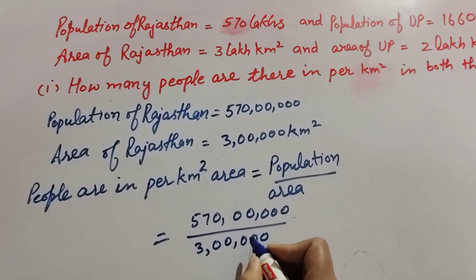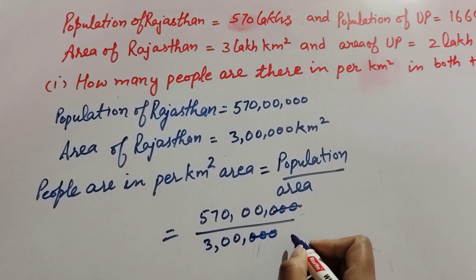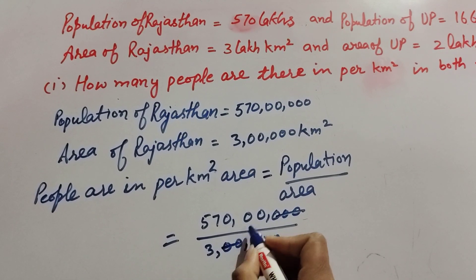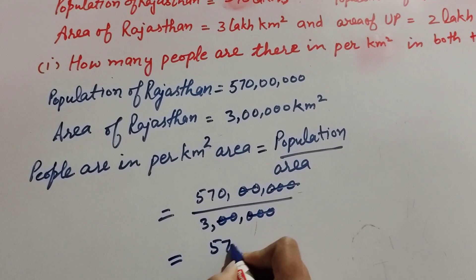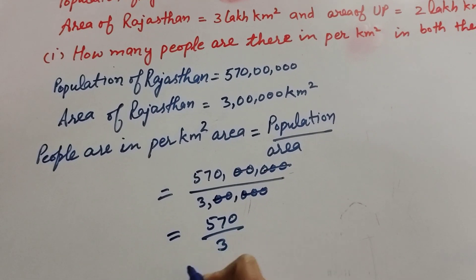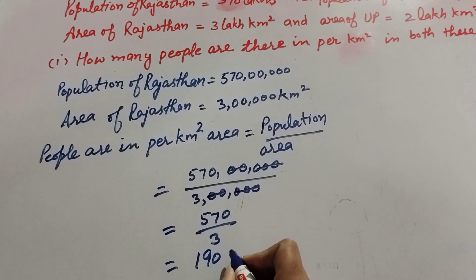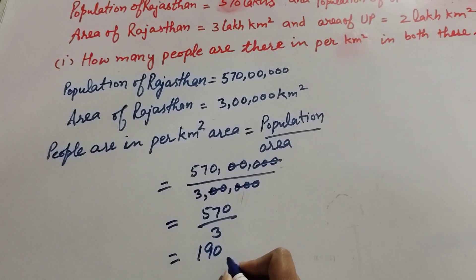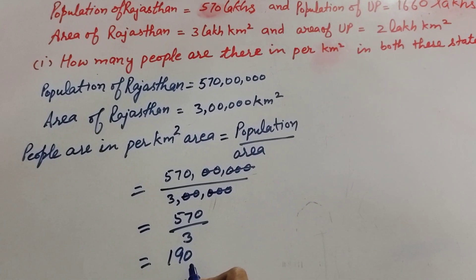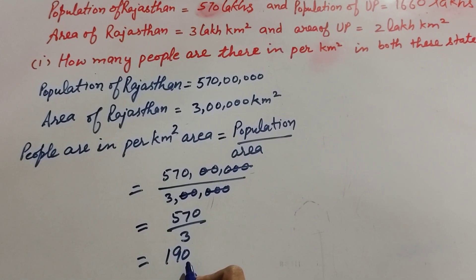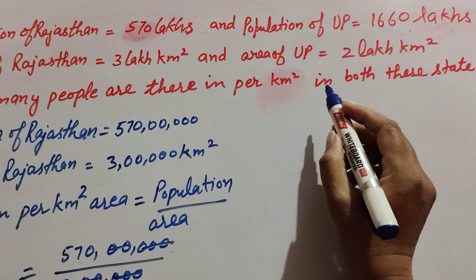Now, the lakh in the numerator and lakh in the denominator are both cancelled. It is equal to 570 divided by 3. We get the answer 190. So 190 people are in per kilometer square area in Rajasthan.